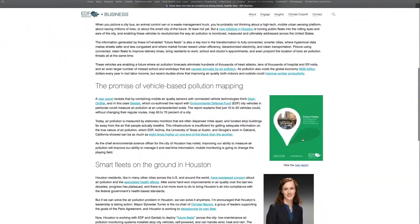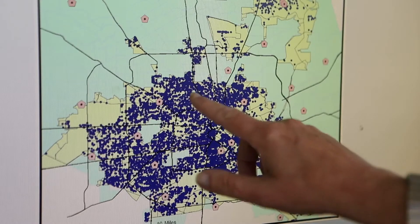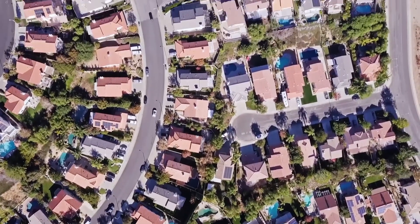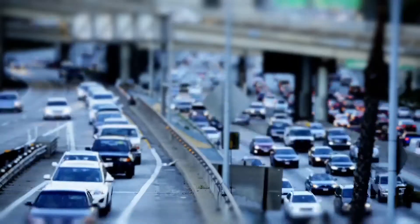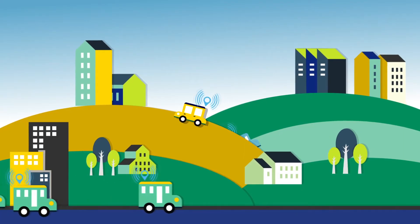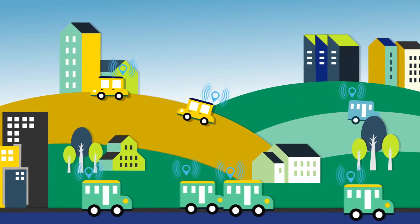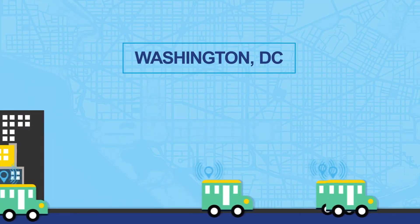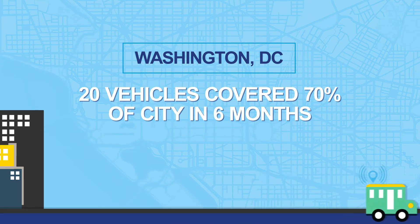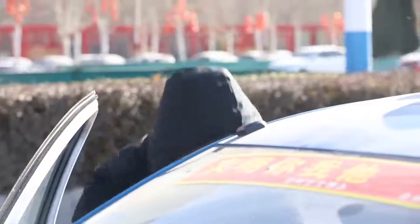EDF's Future Fleets report describes how this analysis works. EDF's analysis found that a fleet-based monitoring approach, where fleet vehicles drive their regular routes doing their regular jobs, can achieve substantial coverage of a city in a few months' time by equipping just a few of the right vehicles with sensors. For example, a fleet could map 50% or more of a city with just 10 vehicles driving their regular routes. In Washington, D.C., the top 20 public vehicles covered almost 70% of the entire city in six months. The modest number of public vehicles required makes it clear that hyperlocal insights are within reach.